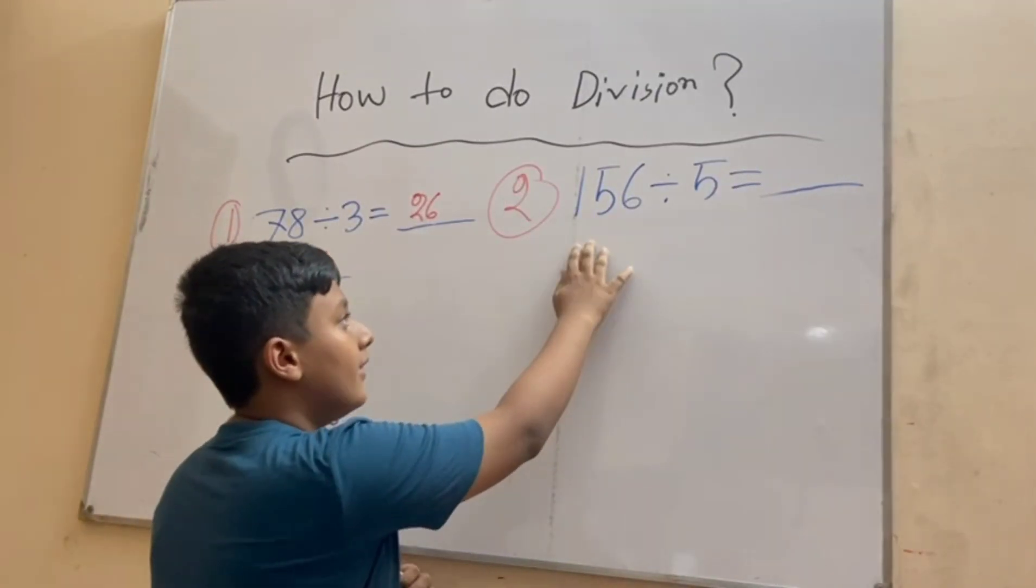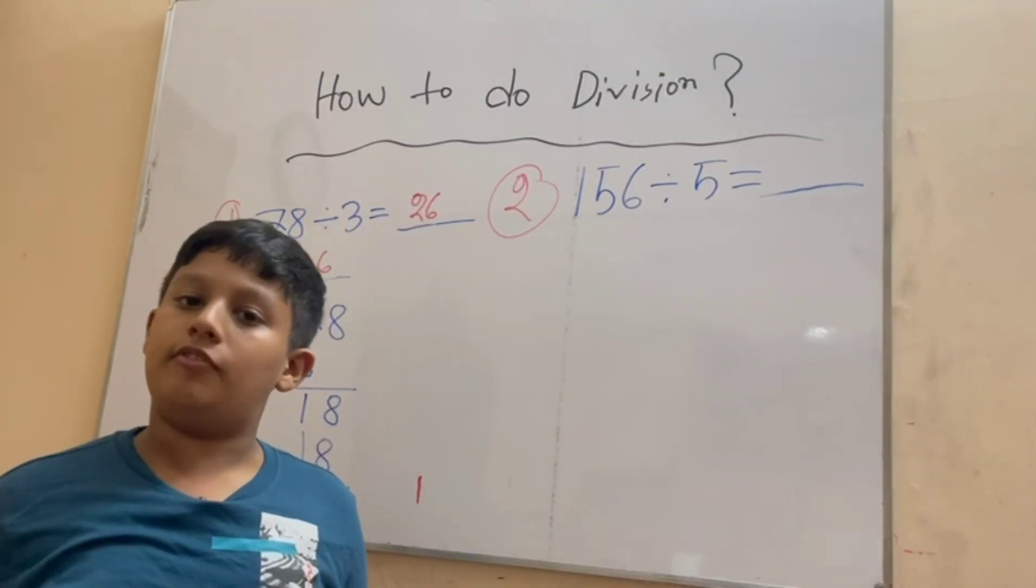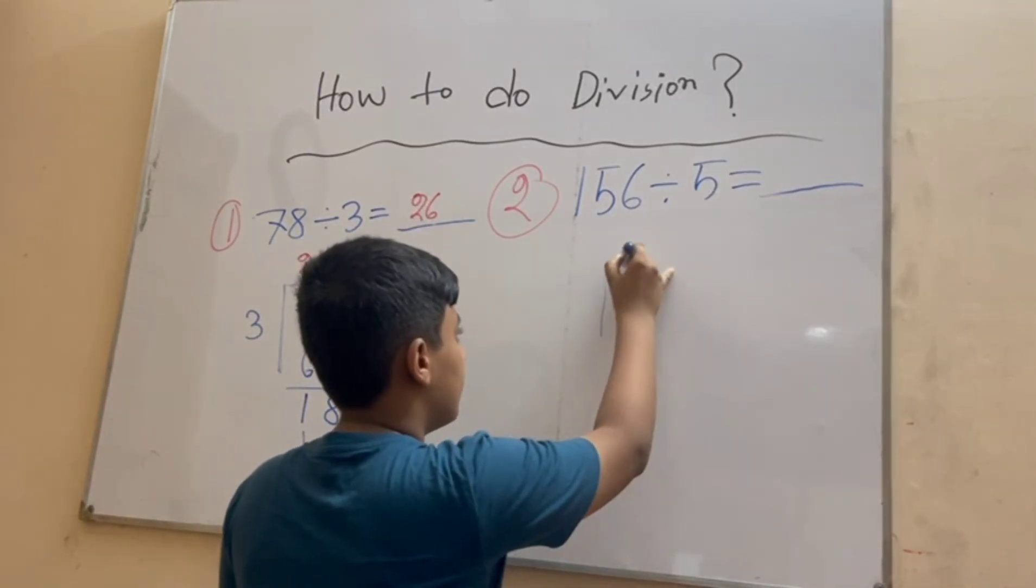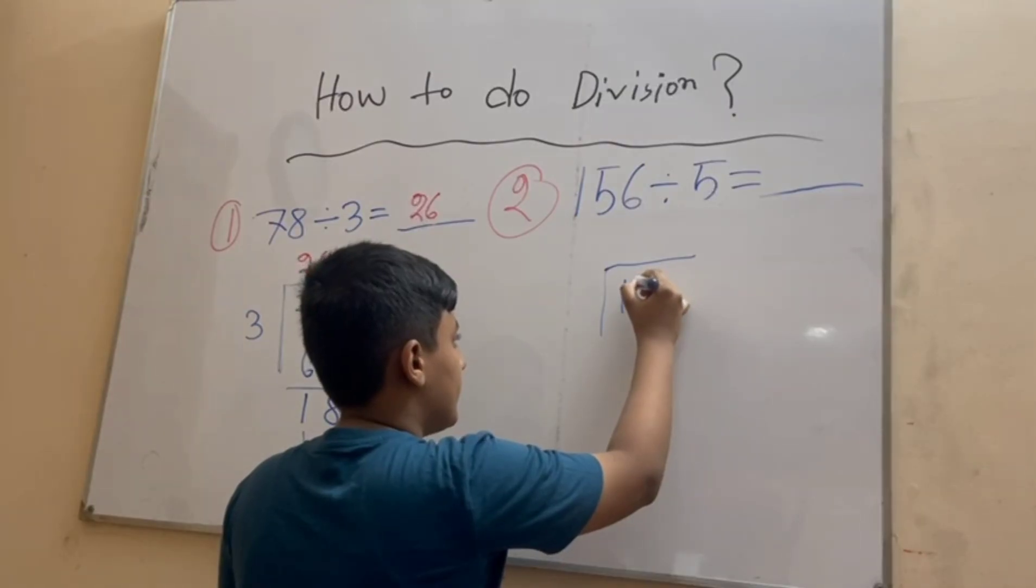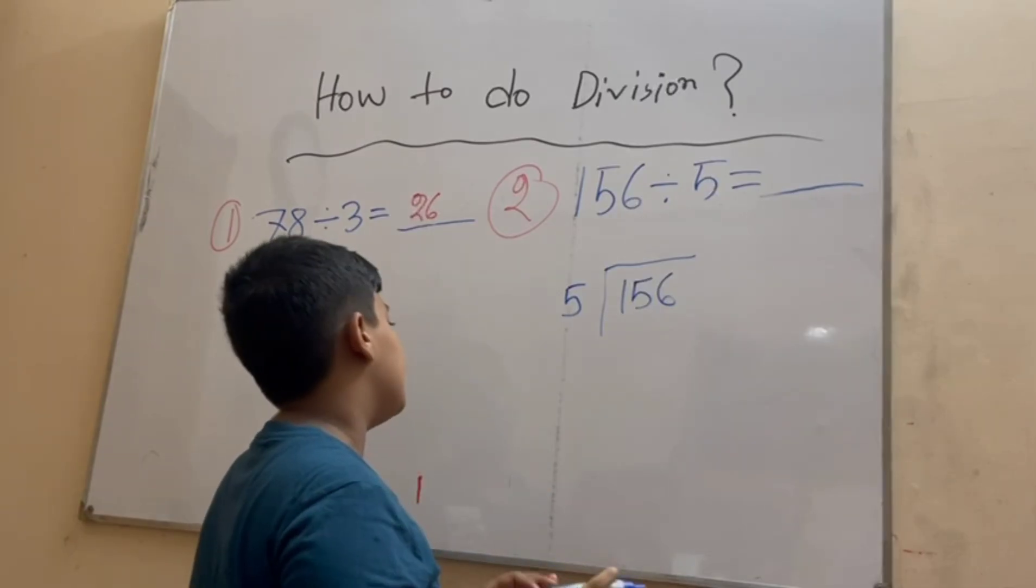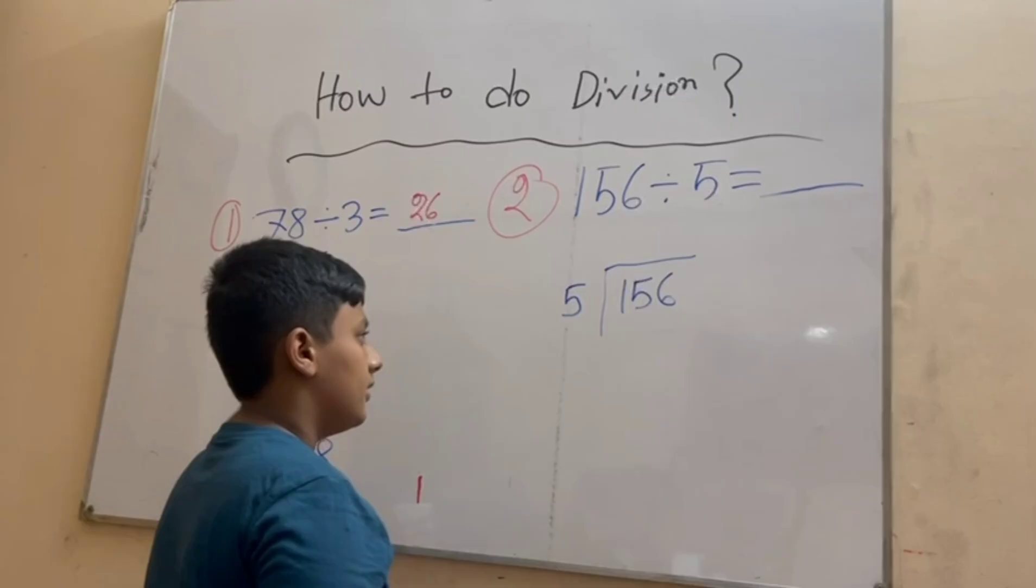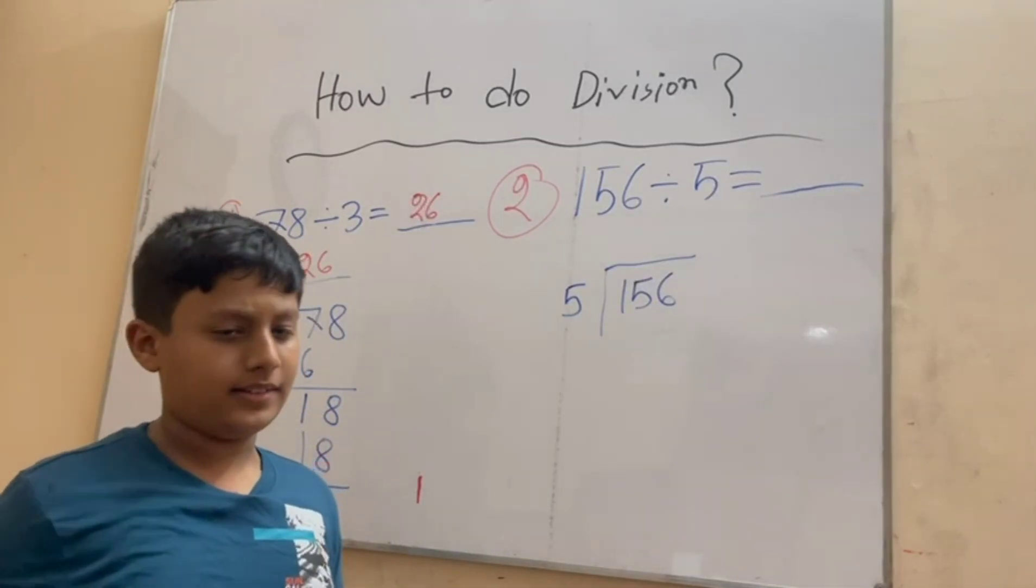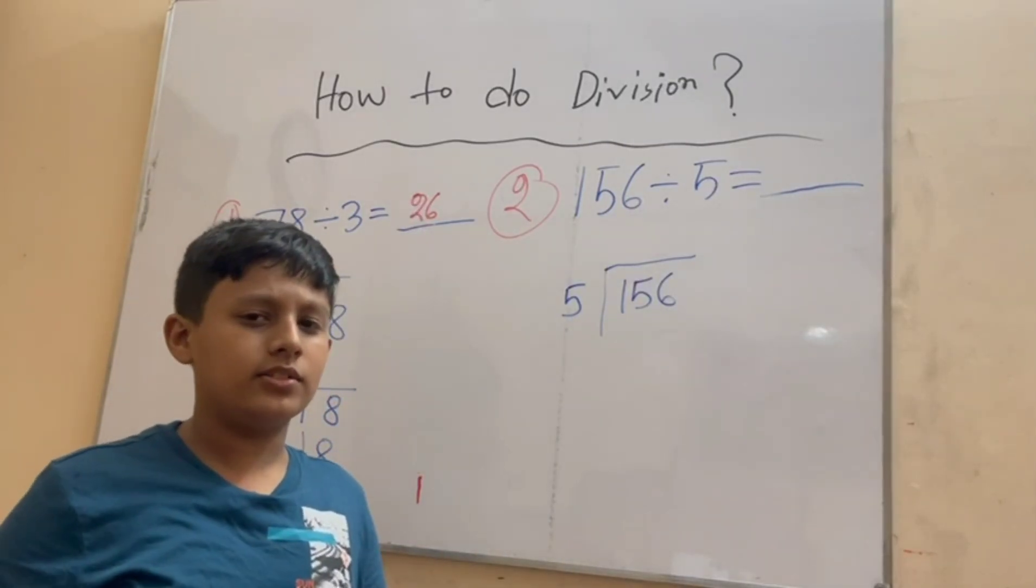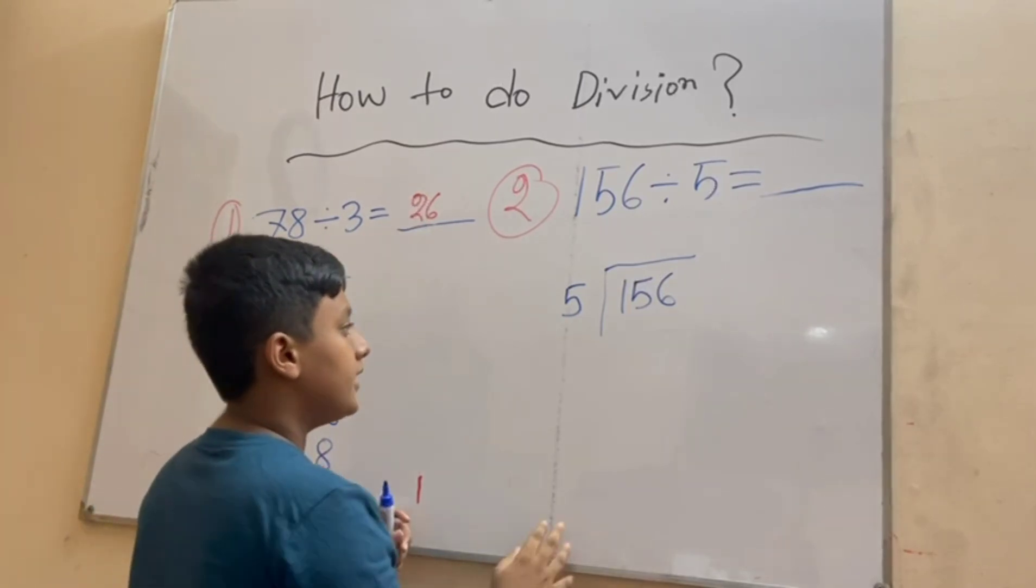Number two: 156 divided by 5. Now we are going to do three digit division and here also you have to do a working. Let's begin: 156 divided by 5. Here a question will pop up in your mind: if one is smaller than five, then how are we going to do step by step division? Well, now we have to take the first two digits: one, five, which is 15.